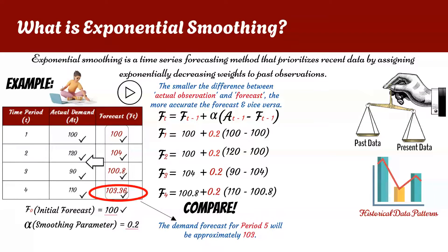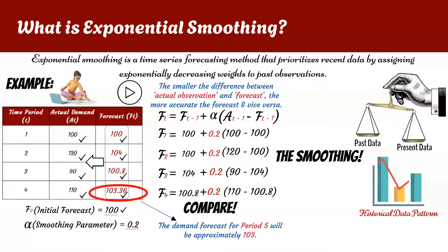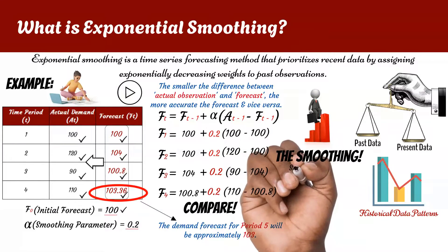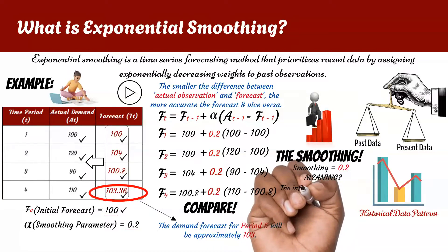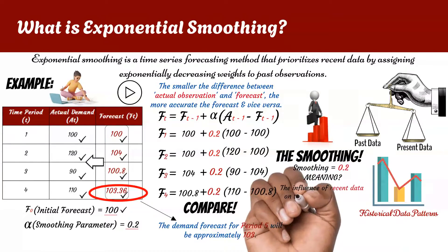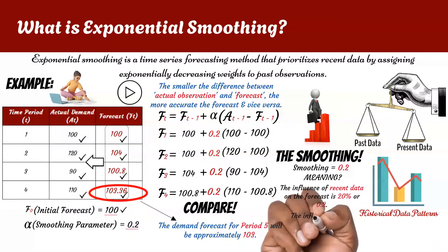Second, the operations manager will also do well to understand the role of the smoothing parameter in the forecasting equation. It is worth noting again that the forecasted values aim to capture the underlying trend in demand by adjusting to changes over time. Based on our calculations, the forecasting model responds to recent observations and changes with the smoothing parameter of 0.2. This suggests that approximately 20% of the weight in calculating the forecast comes from the most recent observation, and 80% is influenced by the previous observation.